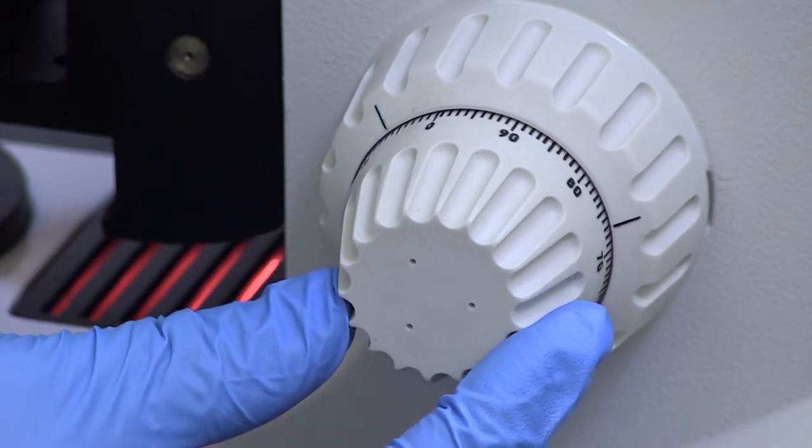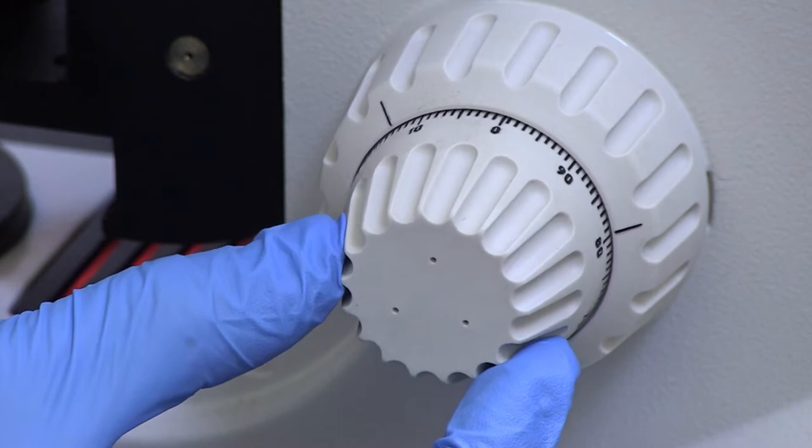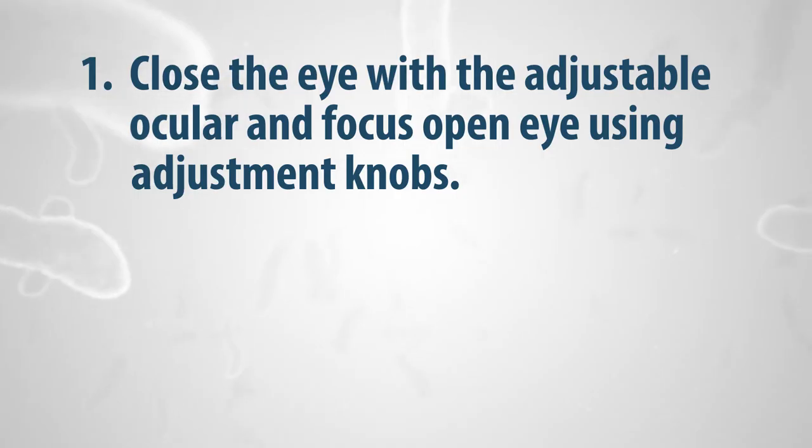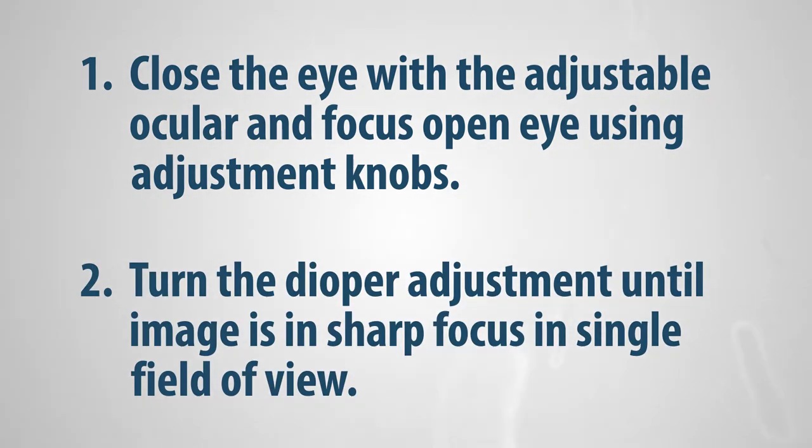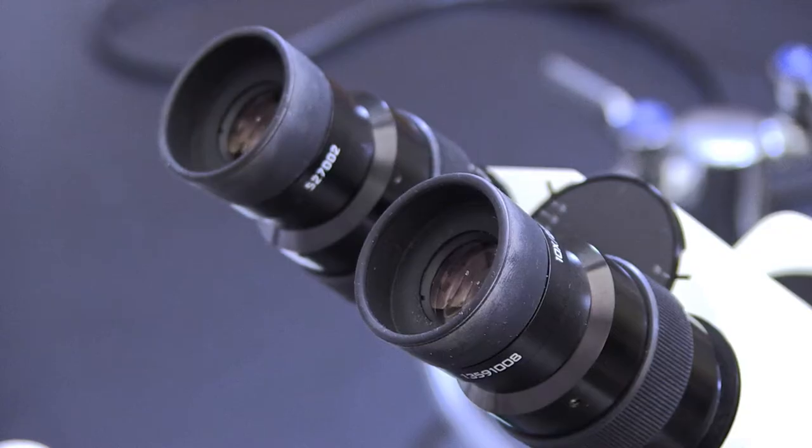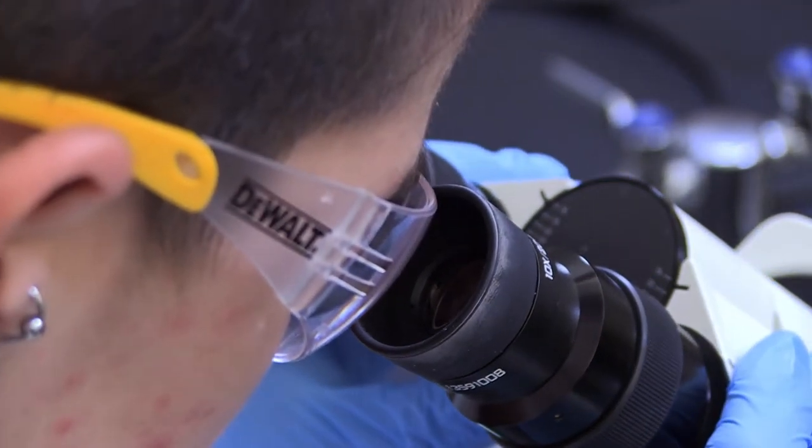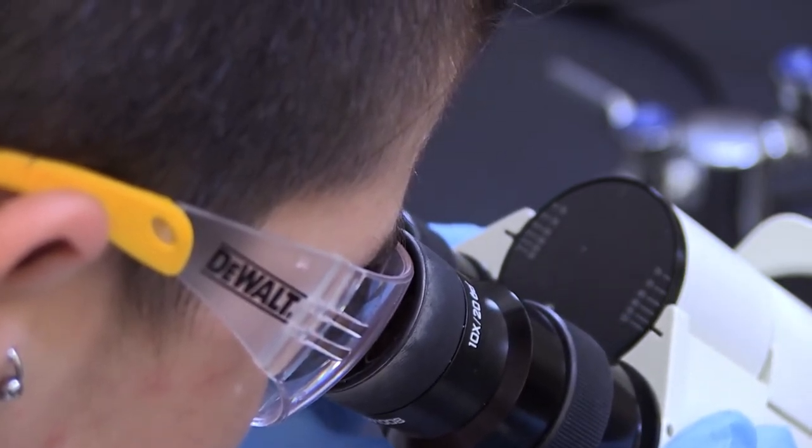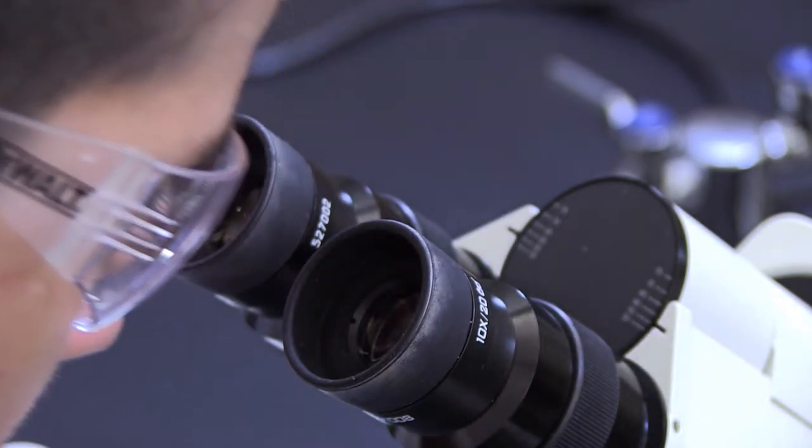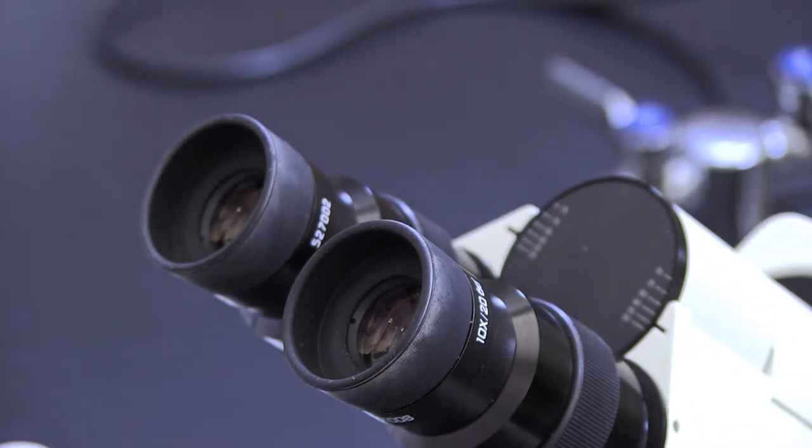Use the diopter adjustment to compensate for differences in visual acuity between your eyes as follows. First, close the eye with the adjustable ocular and focus your open eye using the coarse and fine adjustment knobs. Second, using only the eye with the adjustable ocular, turn the diopter adjustment until the image is in sharp focus. Look through both oculars and slowly adjust the distance between them so that the interpupillary distance matches the distance between your eyes and a single image is shown.